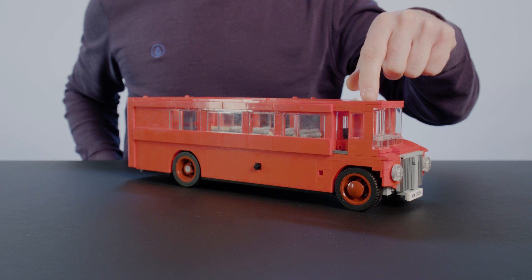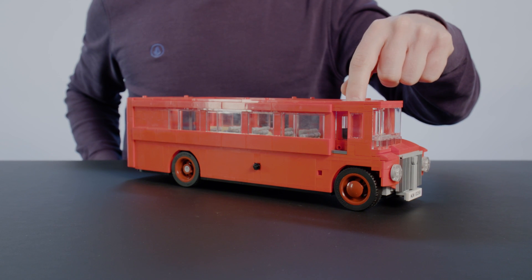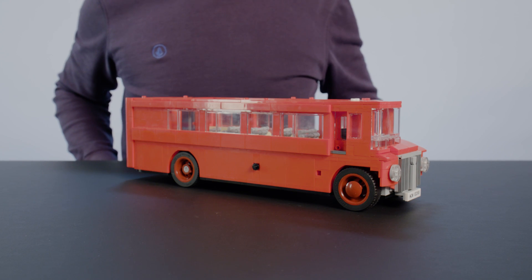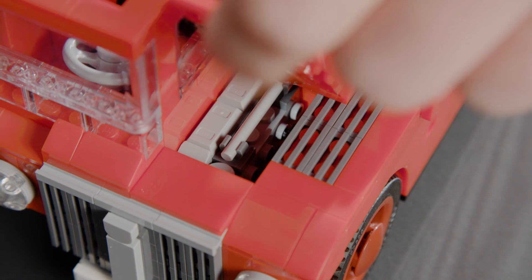In the front the driver sits and has an opening and closing door. In the front you also have the bonnet, and underneath the bonnet you have the engine.